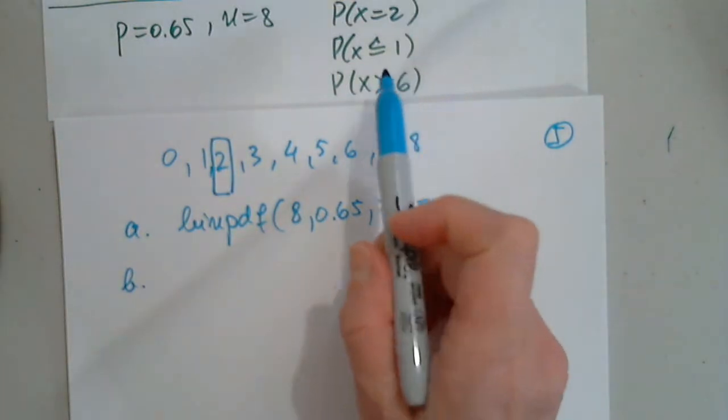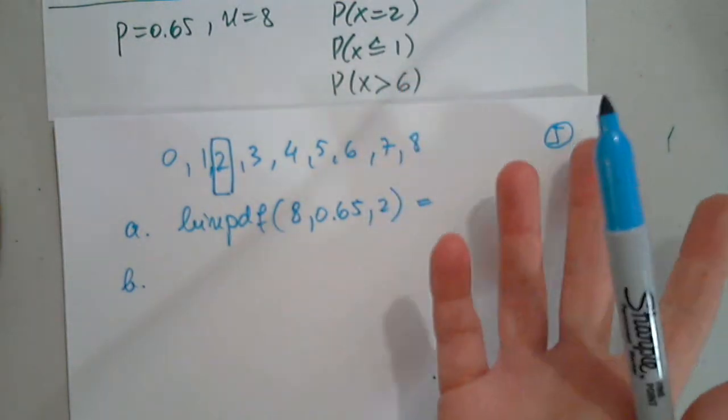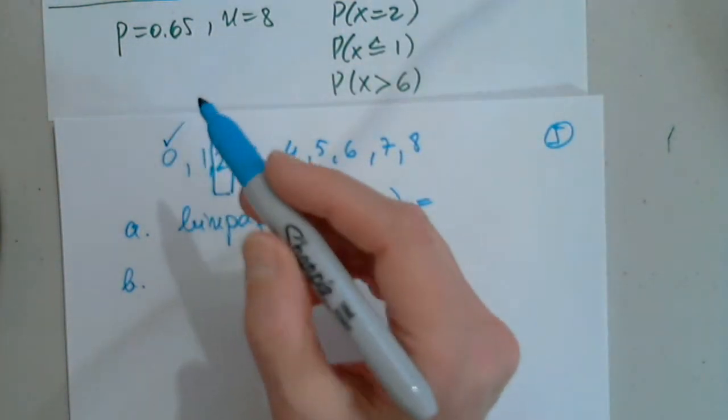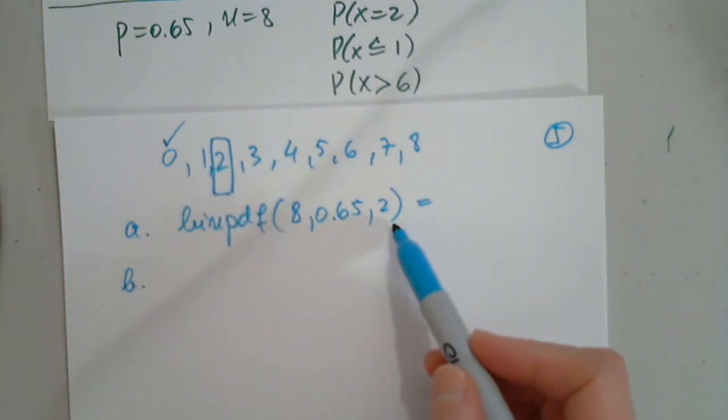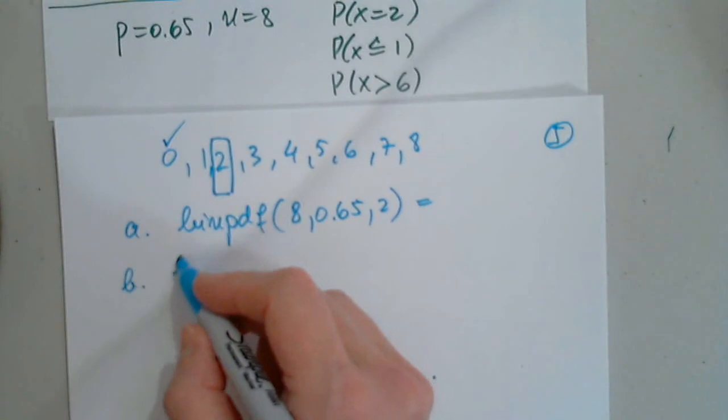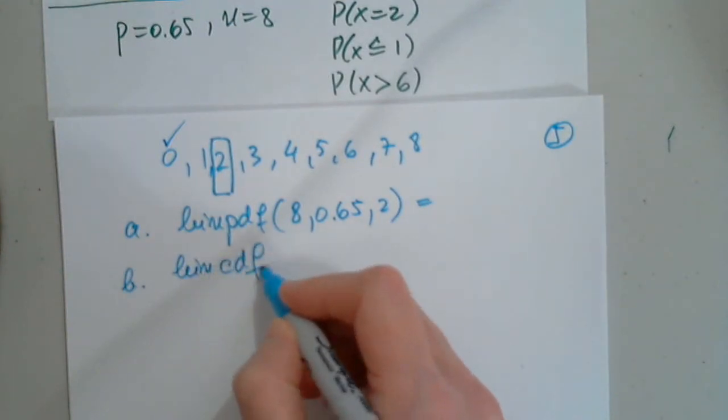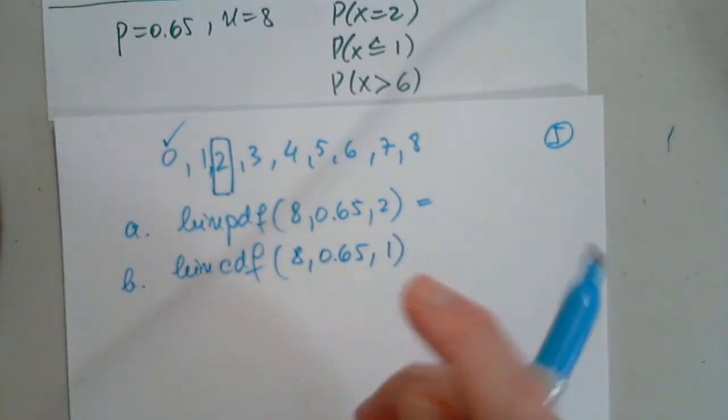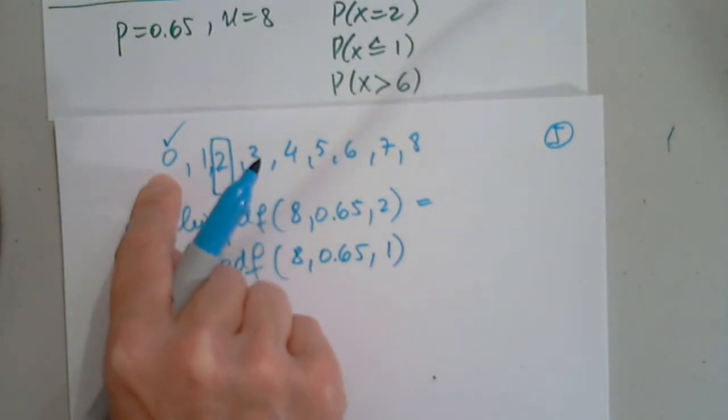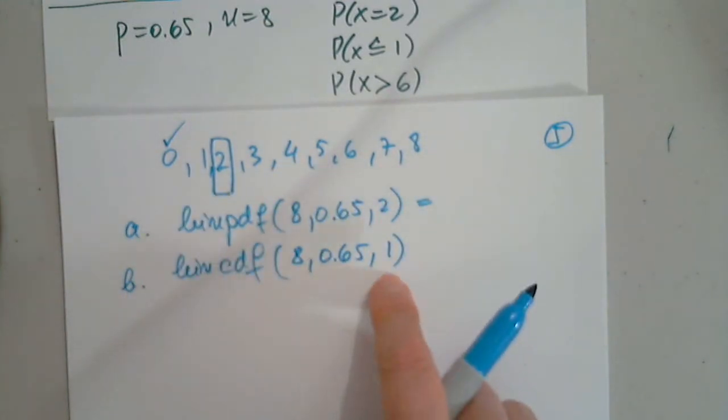In part b, they want less than or equal to 1. I have two options. I say PDF with 0 and PDF with 1. Or, I can say binomial CDF with 8, 0.65 and 1. And it's guaranteed that it will start from the beginning, from the smallest, till where I wanted it to stop inclusive. So that's the better one.